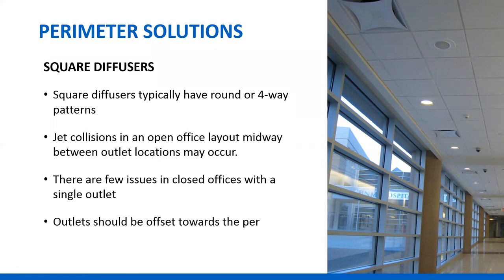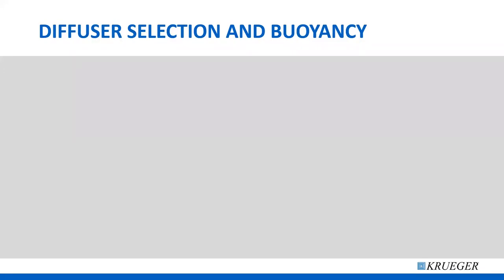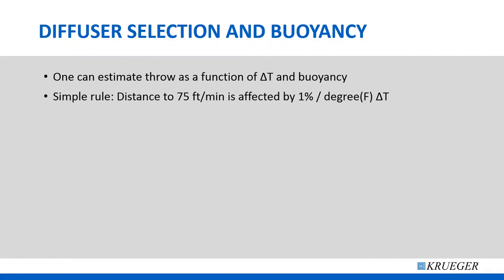Outlets should often be offset towards the perimeter. Buoyancy can be predicted with some degree of accuracy. We know that we can estimate the effect of temperature on throw using a simple equation, remembering that hot air rises and cold air falls. A simple rule: take the 75 feet-per-minute throw. Where do you get that? The catalogs print 50 and 100 feet-per-minute throw — 75 feet-per-minute will be in between the two. Almost every diffuser in the Kruger catalog has isothermal throw data, meaning room temperature.